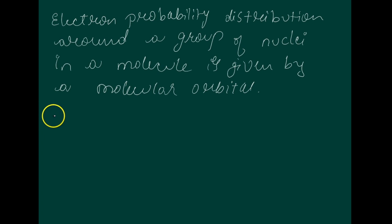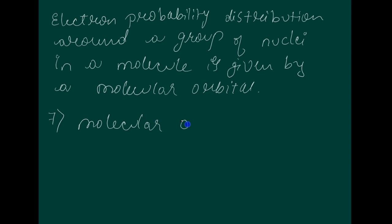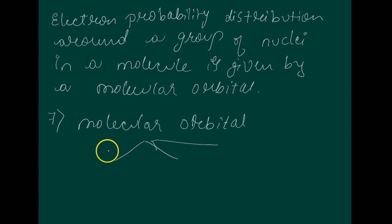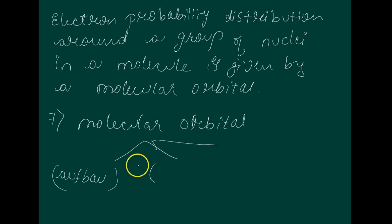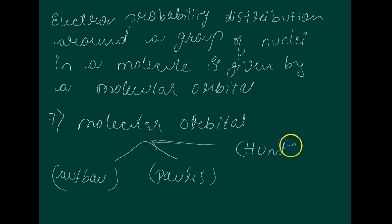Seventh feature: the molecular orbitals, like atomic orbitals, are filled in accordance with the Aufbau principle, obeying the Pauli exclusion principle and Hund's rule — just as atomic orbitals follow the same rules.